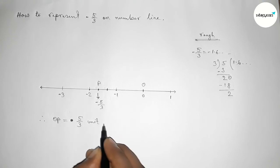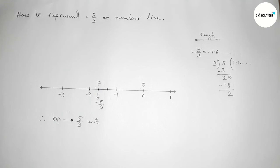Therefore the distance OP equals five by three units — the value is positive because length is always positive. That's all, thanks for watching. If this video is helpful to you, please share it with your friends. Thanks.